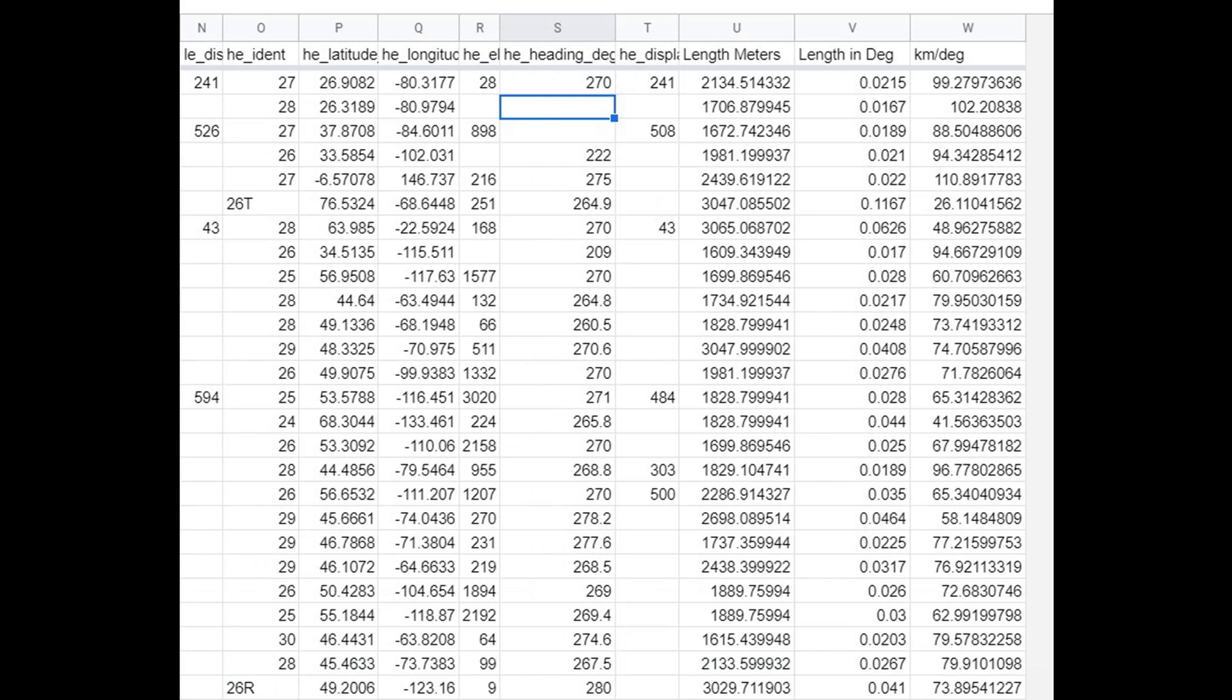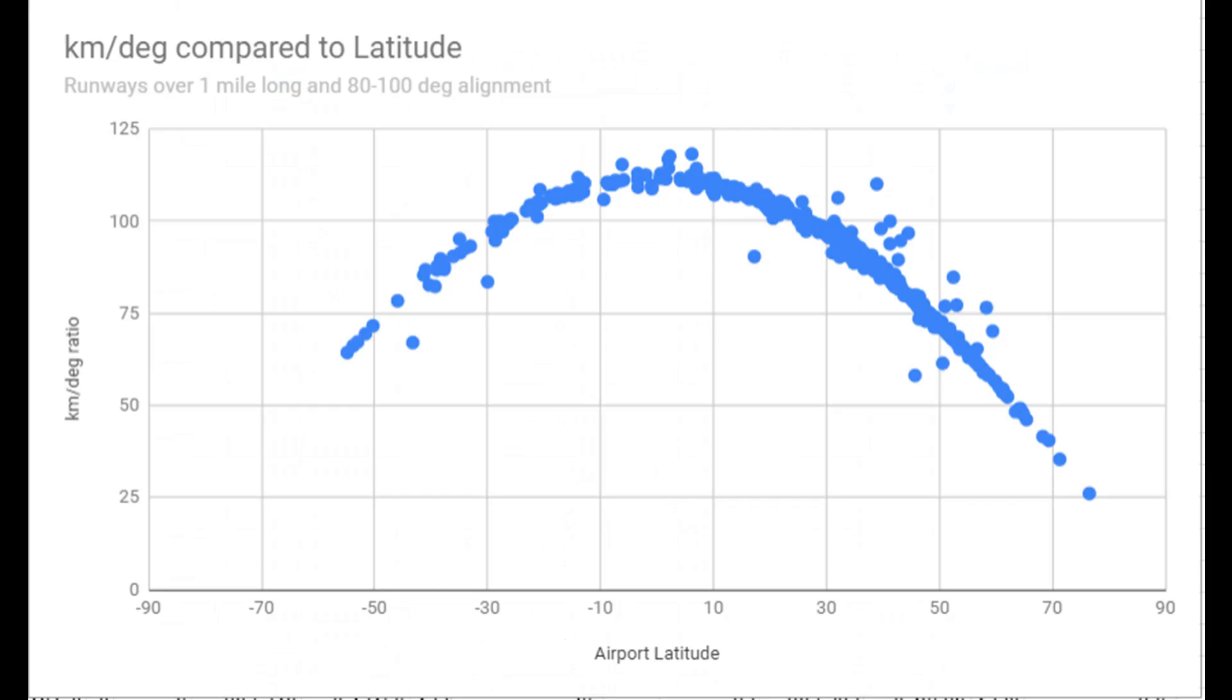So when I plotted the latitude of the runways on the x-axis, the independent variable, and on the y-axis the kilometer to degree ratio, the dependent variable, what do you think I get? Hold on to your seats, boys and girls. Isn't that interesting?